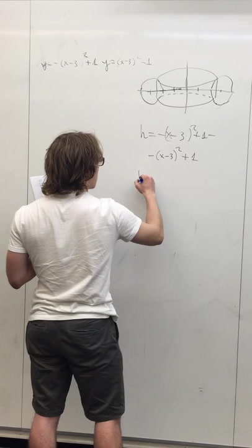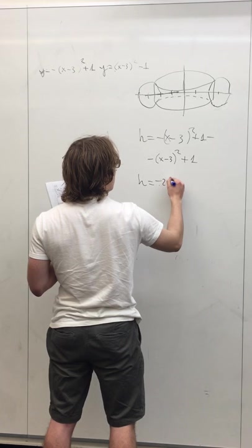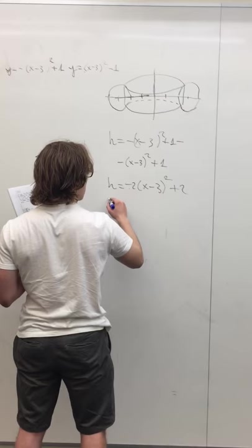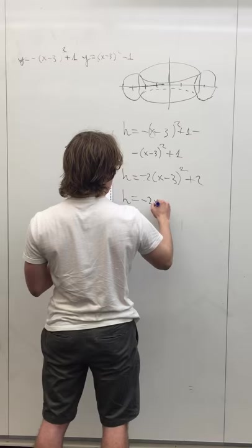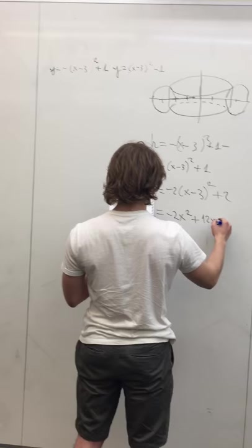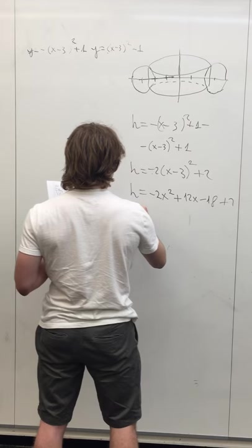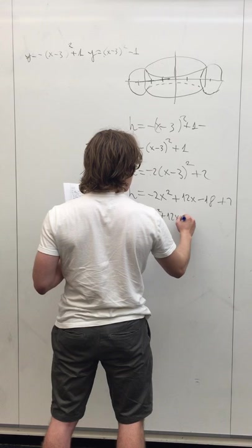And it will be equal to negative 2x minus 3 all squared plus 2, which equals minus 2x squared plus 12x minus 18 plus 2. And now our height equals negative 2x squared plus 12x minus 16.